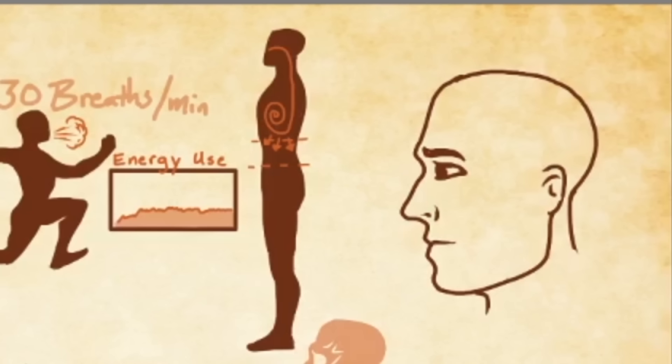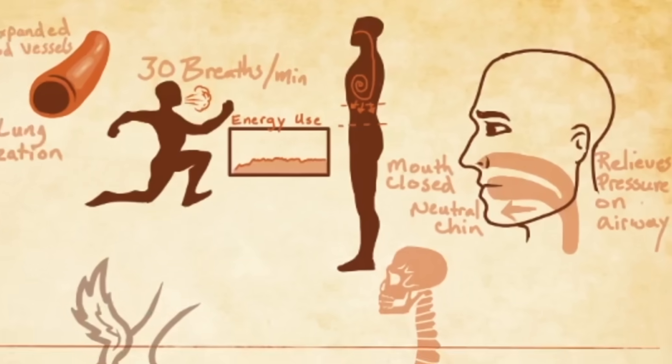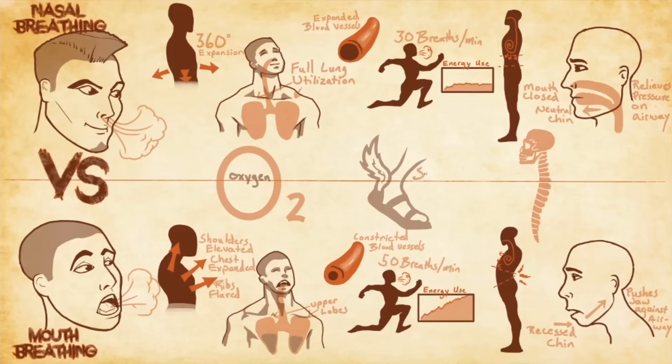The jaw becomes more narrow, cheekbones become less defined, and if present during childhood this often causes crooked teeth. In contrast, nasal breathing allows the mouth to remain shut, keeping the jaw in its proper posture, opening the airway, and allowing the face and teeth to develop normally.